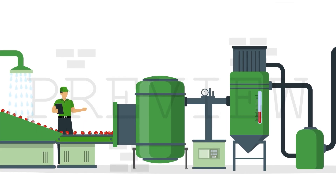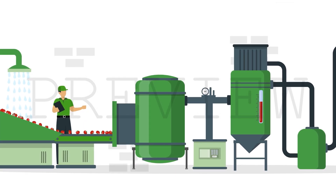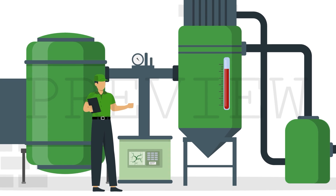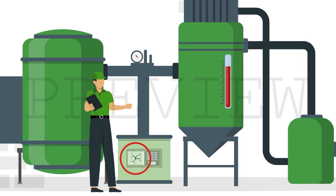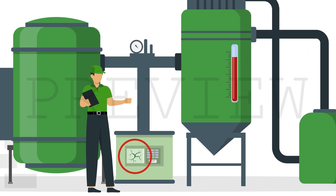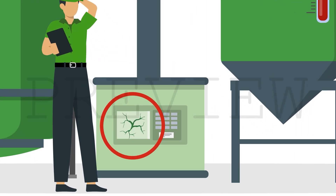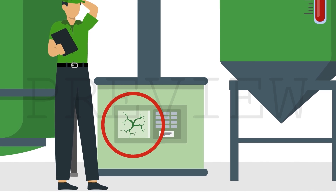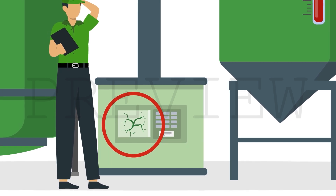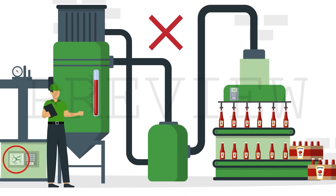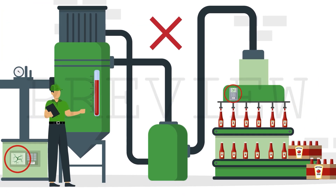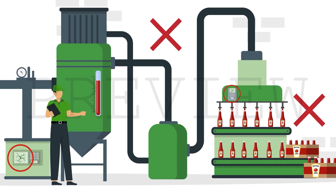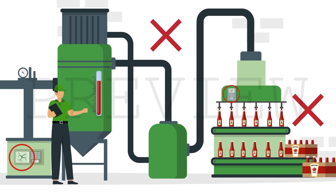Stoppages are much riskier for Continuous Manufacturers, too. The connection between each stage in the production process means that just one faulty piece of equipment can cause serious disruptions. Over time, this could result in extra wear and tear on assets that shortens their useful life.